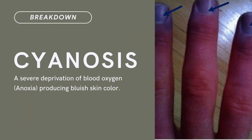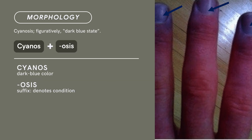Compound term: cyanosis. Brief definition: a severe deprivation of blood oxygen, causing a bluish skin color. Term morphology: cyanosis figuratively means 'dark blue state.' It's a compound of cyanus plus -osis. Cyanus means dark blue color. -Osis is a suffix that denotes condition. There you have it — compound term: cyanosis.